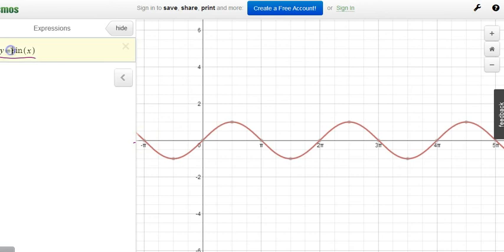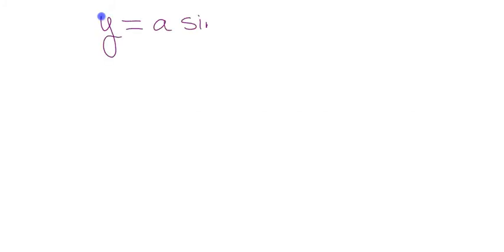Now we're going to look at an equation in the form y = a·sin(bx + c) + d. We want to note what each of the letters — a, b, c, d — does to that basic sine function.